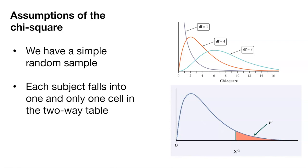Each subject falls into one and only one cell in the two-way table. There can't be any movement across the different tables. Every observation falls within one cell.